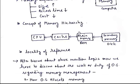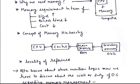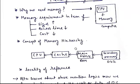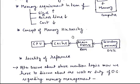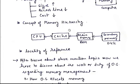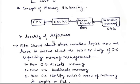We have discussed two basic concepts: why we need memory, what are the requirements in terms of size, access time, and cost, and the second one is the memory hierarchy — why we need a memory hierarchy, with two reasons given. We also discussed the concept of Locality of Reference and how with the help of Locality of Reference it is possible to implement such a type of architecture.